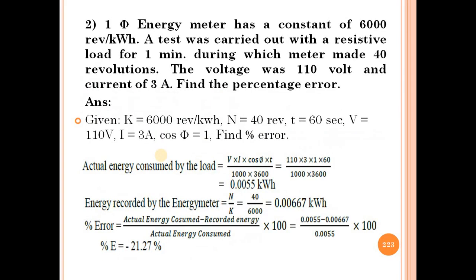Now next example — the same type, only values are changed. A single-phase energy meter has a constant of 6000 revolution per kilowatt hour. So the energy meter constant K value is 6000 revolution per kilowatt hour.